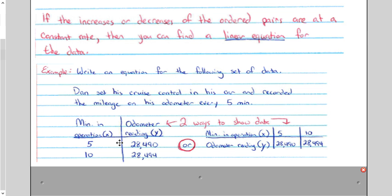Not always, but let's just say 80% of the time. More times than not, this will be your X variable. The second column will be your Y variable. Same thing if you see it written sideways. The first one, the top one, will be your X variable, and the second one would be your Y variable. At five minutes, the mileage on his car is 28,490 miles. Minutes in operation was five minutes. For the five minutes, his mileage was at 28,490 miles, and it was showing us the odometer reading.